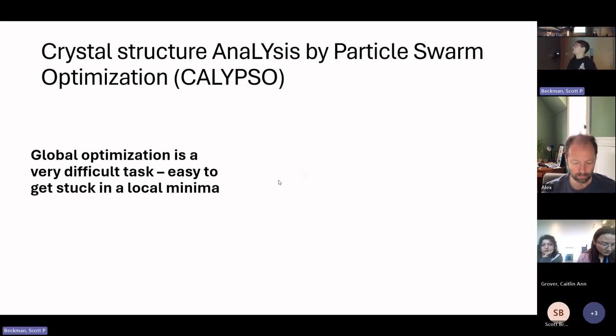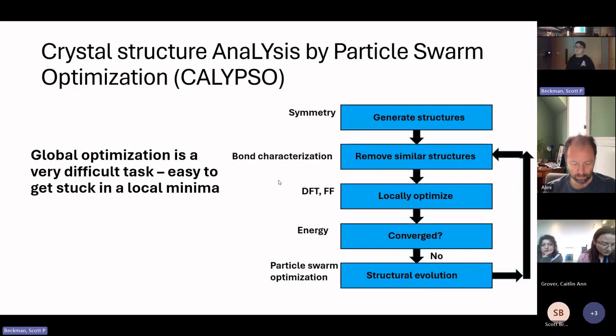This package here, which is abbreviated CALYPSO, stands for Crystal Structure Analysis by Particle Swarm Optimization, is a package that I've been using to look at how, when we introduce the dopant, how the structure changes, and can we keep that cubic structure? How this works is it generates different structures using symmetry based on the space groups, and then it'll remove similar structures using various characterizations. One of them you can think of as the bond characterization, usually some of the distances of the atoms. Once you have these structures, you locally optimize them,